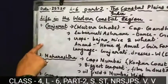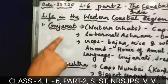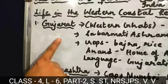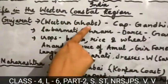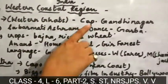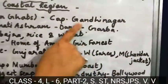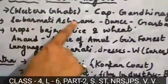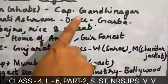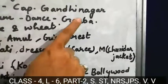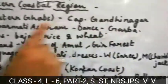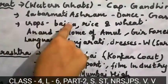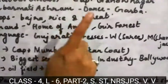The first state here is Gujarat. Gujarat lies in the Western Ghats. Its capital is Gandhinagar. One famous ashram there is Sabarmati Ashram. The dance form of Gujarat is Garba. The crops that Gujarat people grow in their fields are Bajra, rice, and wheat.